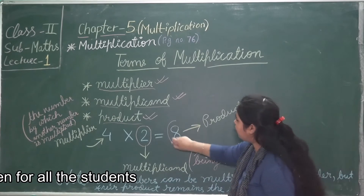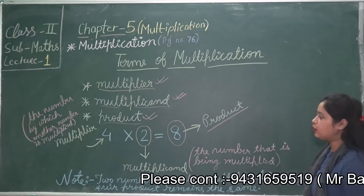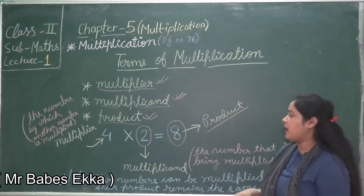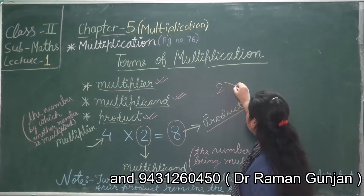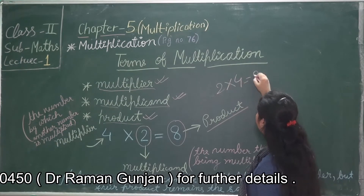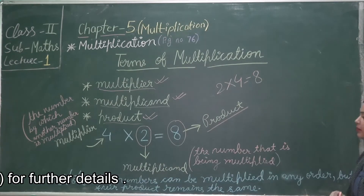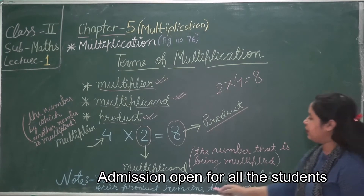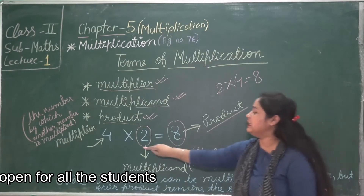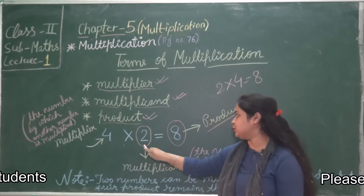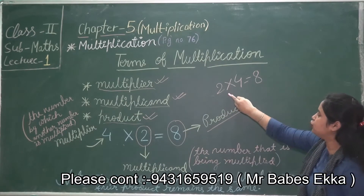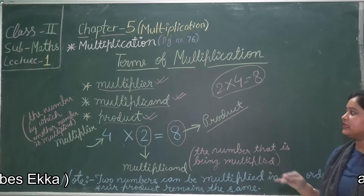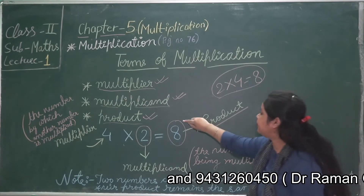The answer of a multiplication is called the product. So 8 is the product here. Also note that two numbers can be multiplied in any order but their product remains the same. For example, 4 multiplied by 2 is equal to 8, and 2 multiplied by 4 is also equal to 8. Reversing the order still gives us the same product.